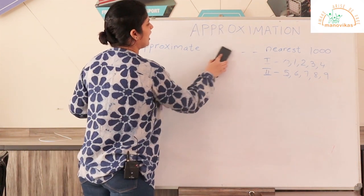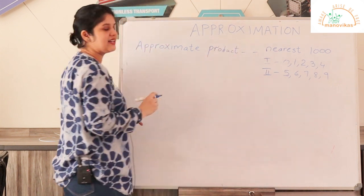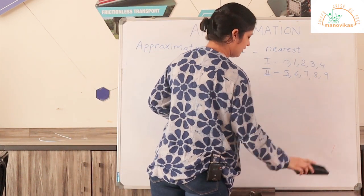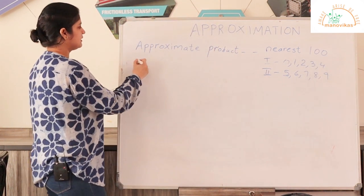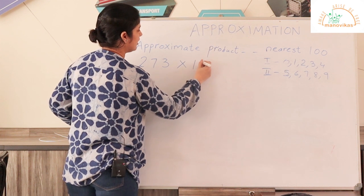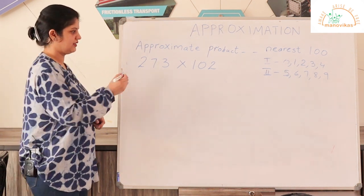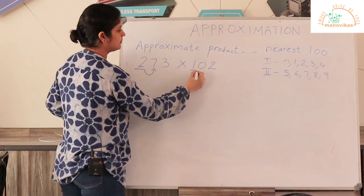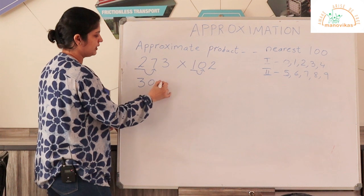Let us take an example where we are asked to find the approximate product. As you all know, product is when you multiply two numbers — the answer you get is called the product. Let's take an example rounding to the nearest hundred. You are given two numbers: 273 multiplied by 102. You are asked to find the approximate product by rounding to the nearest hundred. Underline the digit in the hundreds place and check out the digit after it — here it is 7.